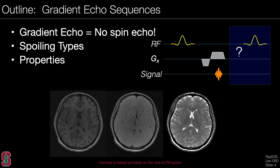We begin this lecture reminding you that gradient echo sequences have no spin echo, there are different spoiling types, and these sequences have different properties. At the end of this lecture, we will have seen the three major types of spoiling that provide three very different contrasts.